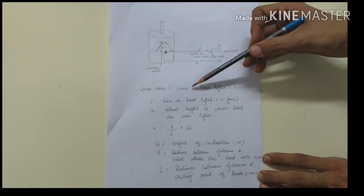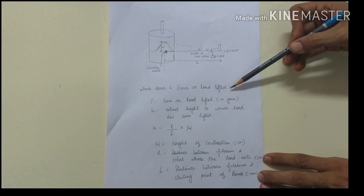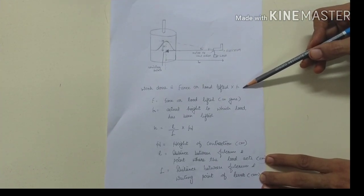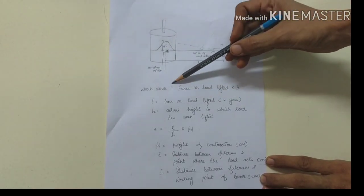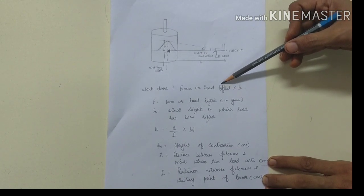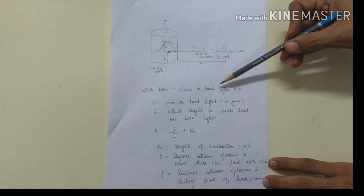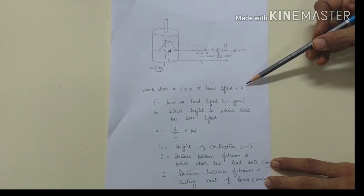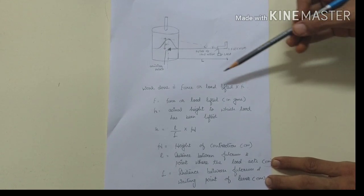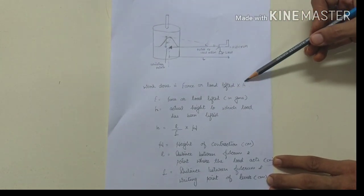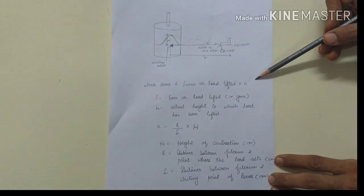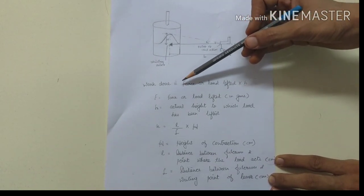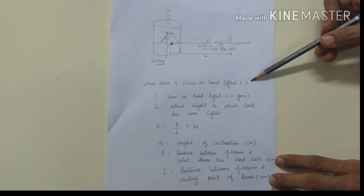In free-loaded condition, as we increase the load, initially the height to which the load has been lifted increases, so work done increases. But with further increase in load, as seen in the graph, the height decreases, so work done decreases. Whereas in after-loaded condition, with increase in load the height decreases each time, so work done decreases every time.